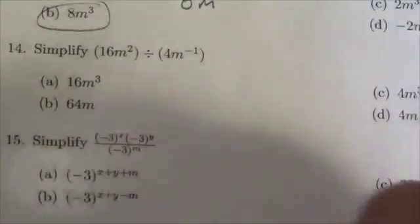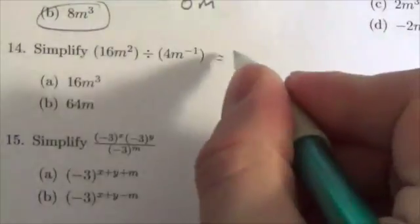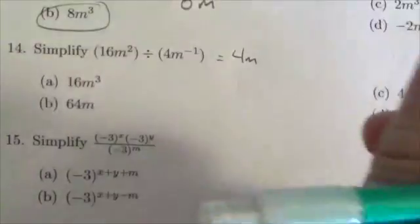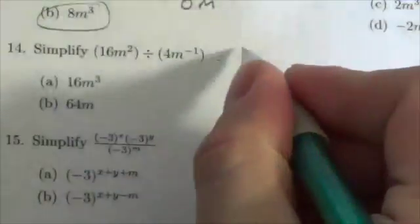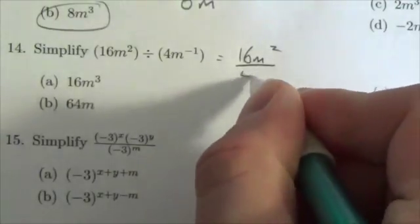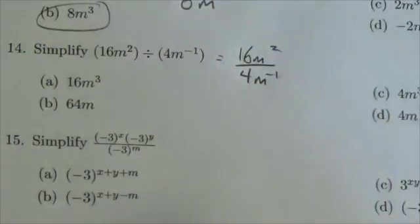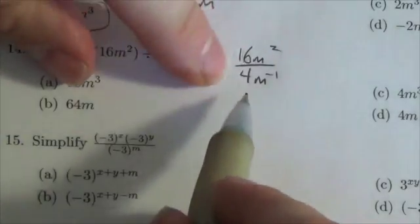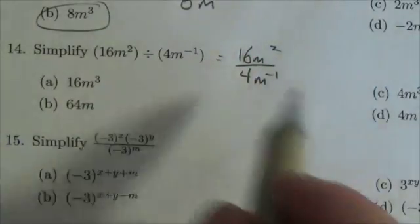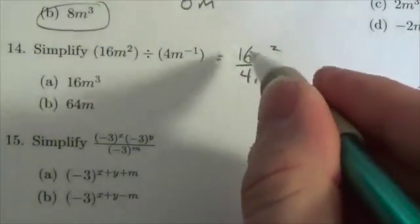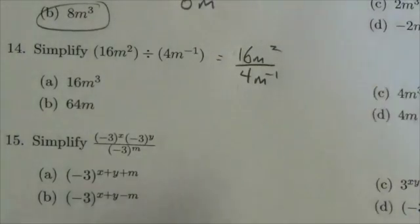Let's write this out vertically. Sorry, I can't believe I did that. Not 4m squared. It's going to be 16m squared divided by 4m to the negative 1. You want to treat the coefficients separate from the powers of m there. So 16 divided by 4 is going to be 4.